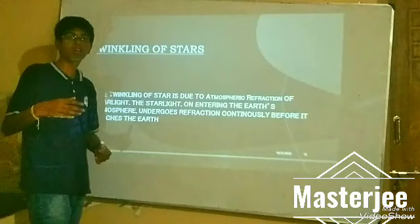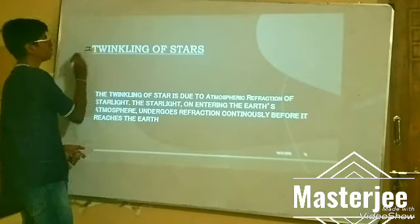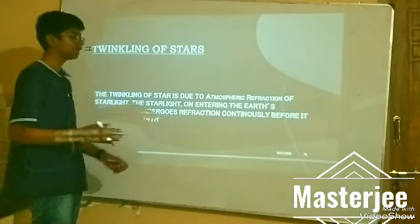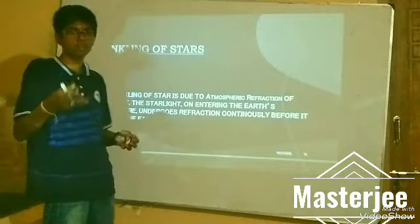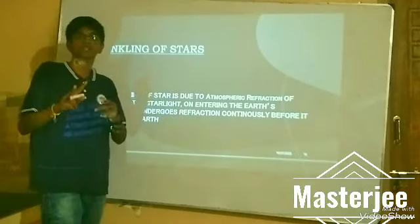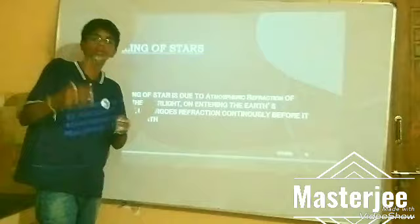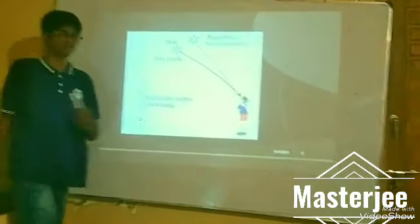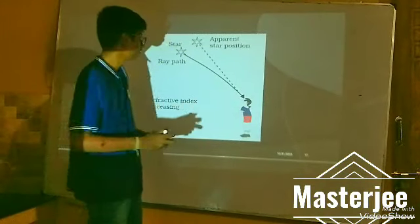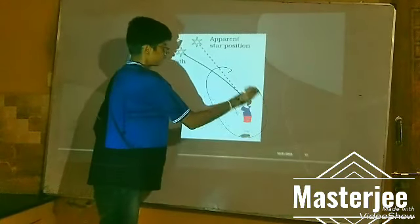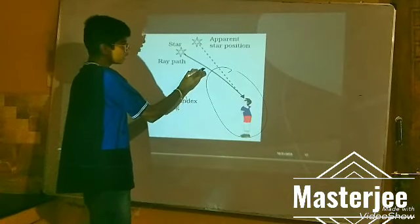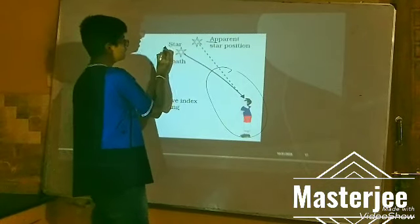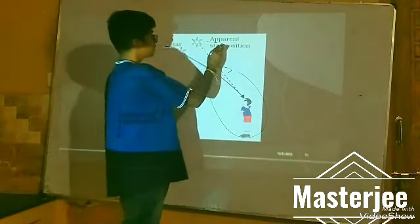The first application of atmospheric refraction is the twinkling of stars. Starlight enters the Earth's atmosphere and undergoes continuous refraction, forming two positions — the actual position and the apparent position. Only the apparent position is visible to our eyes. When starlight coming from a star undergoes refraction in the Earth's atmosphere, it forms an apparent position which appears to be in motion for the observer.